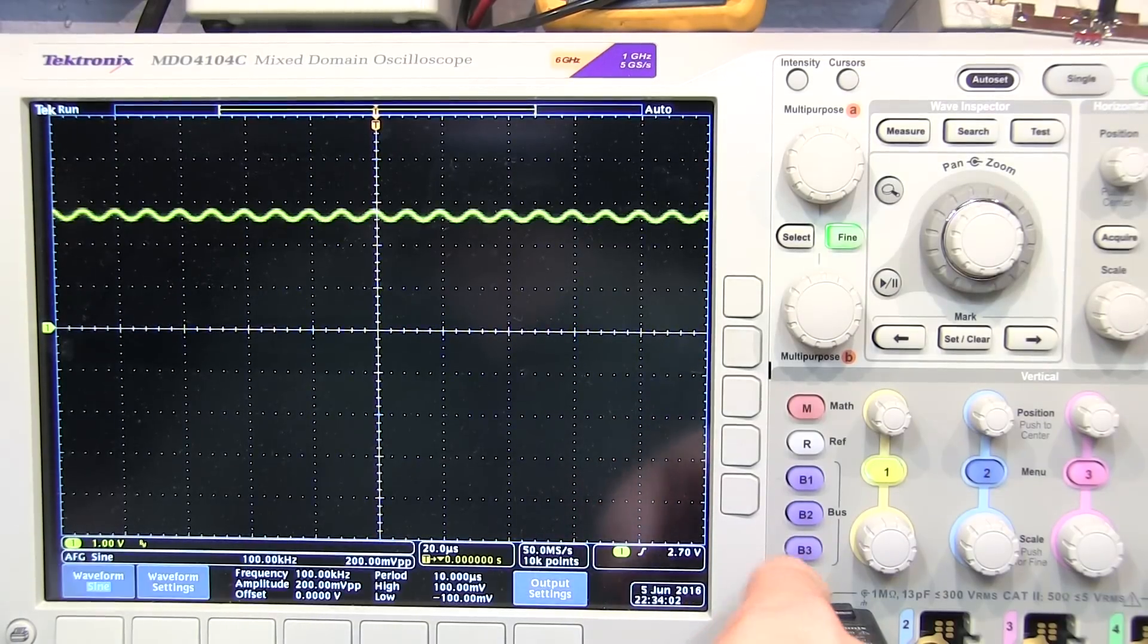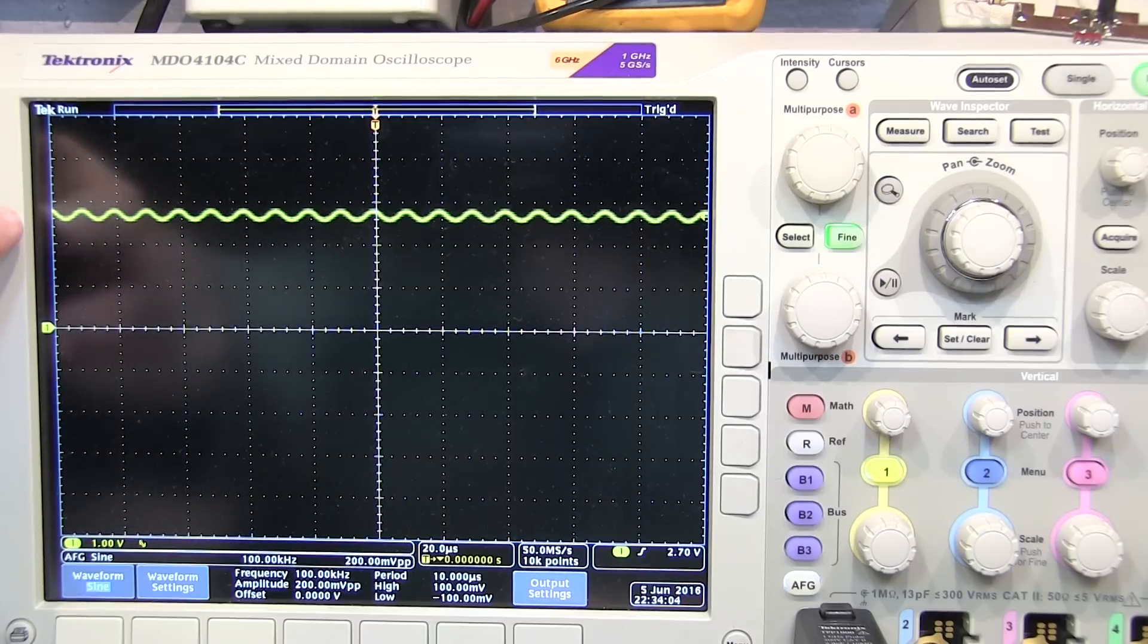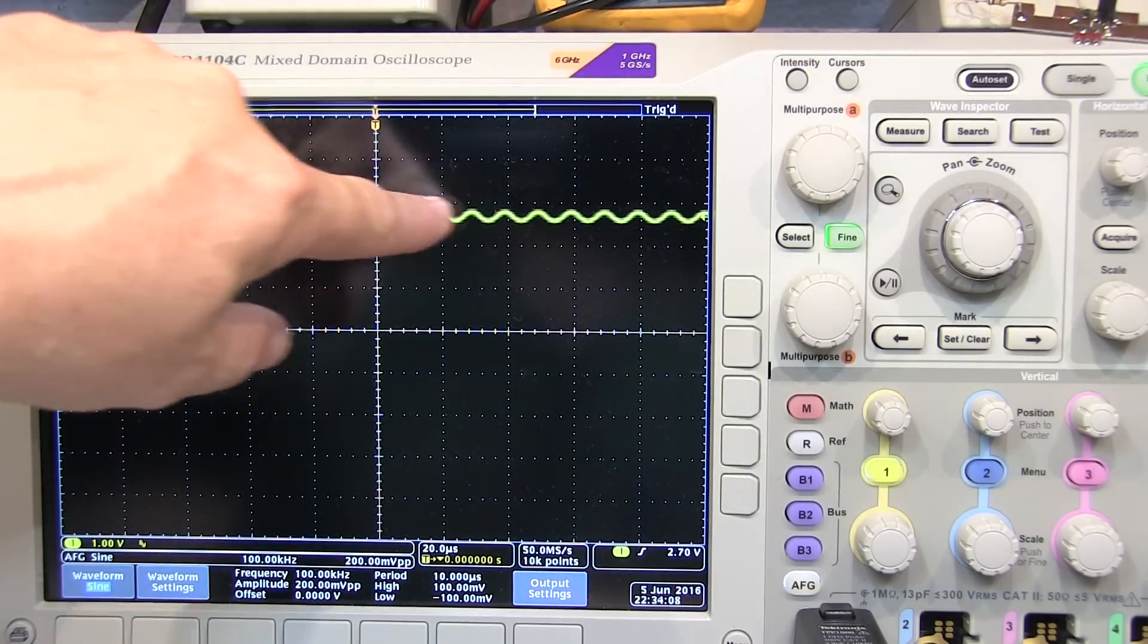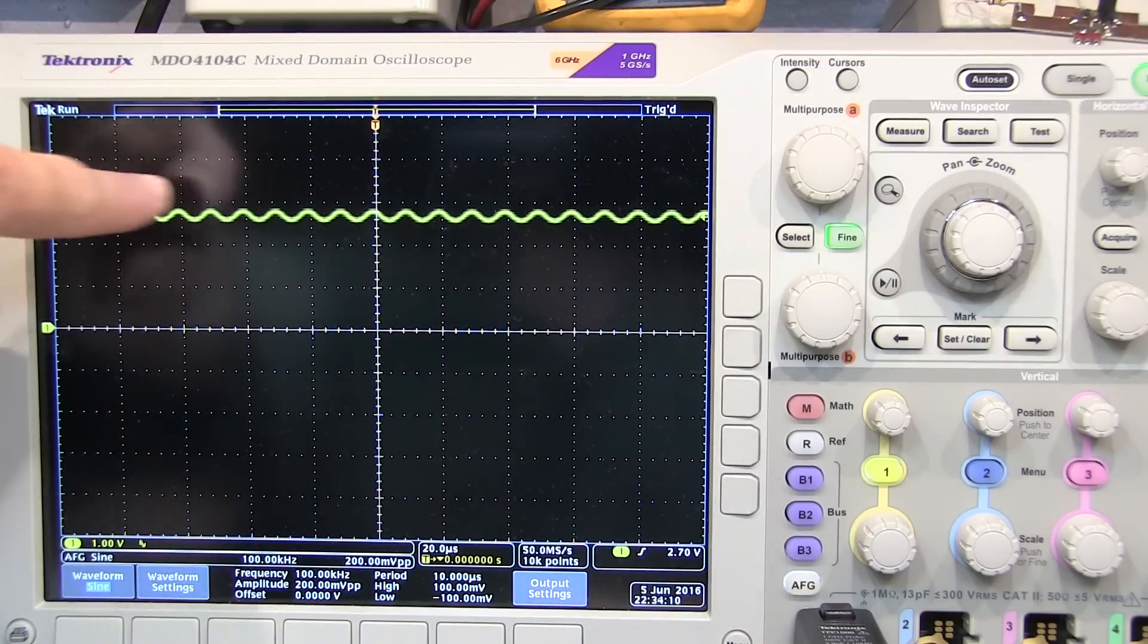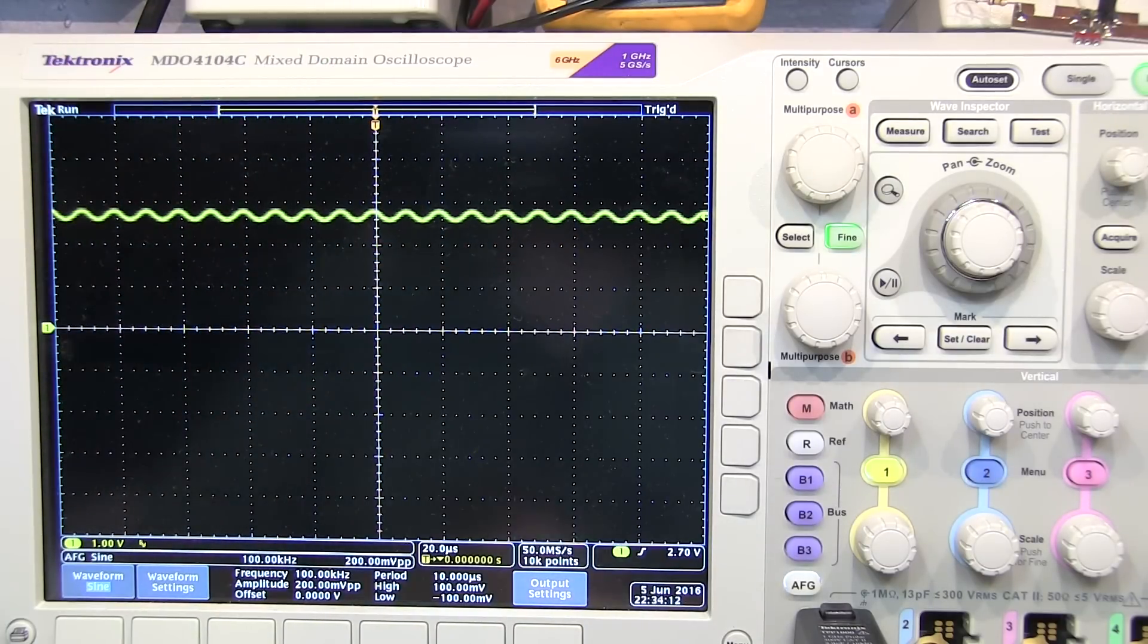I'll turn my signal generator on here, and now I can actually see the output coming from the amplifier is a small, about 200 millivolt peak-to-peak signal that's riding on top of that 2.7 volt bias that's sitting at the collector.